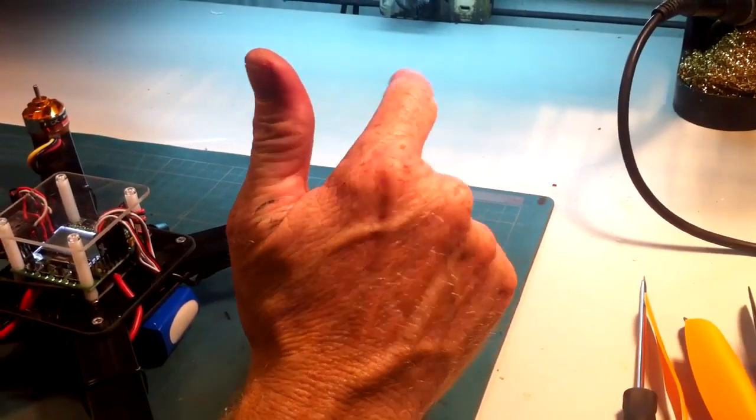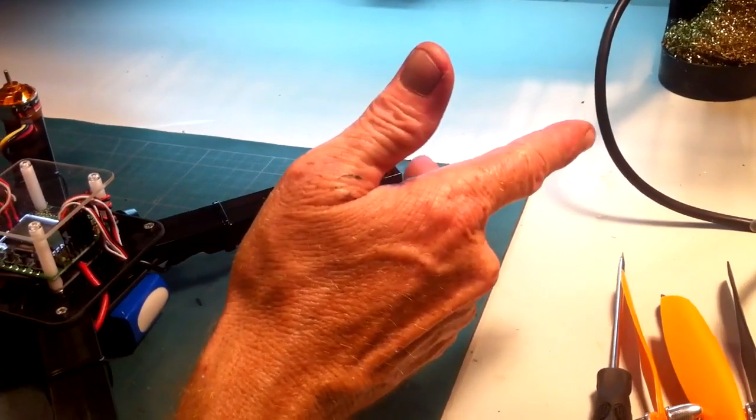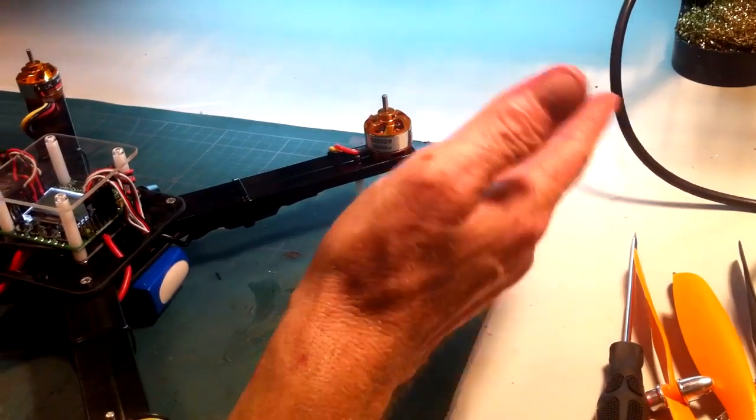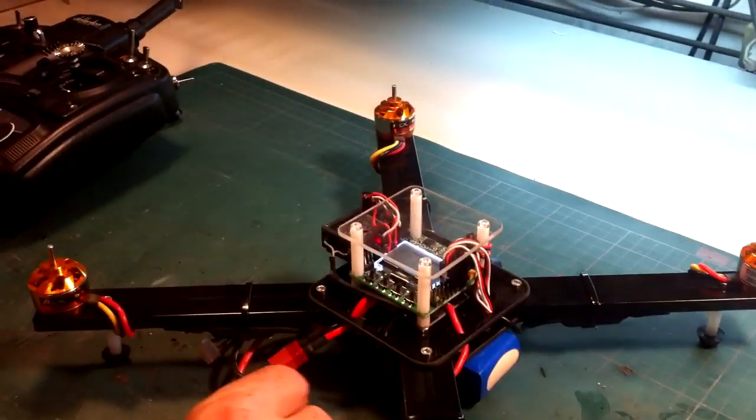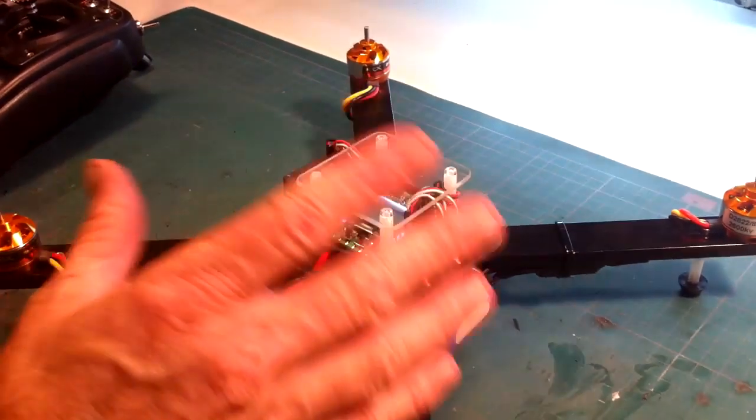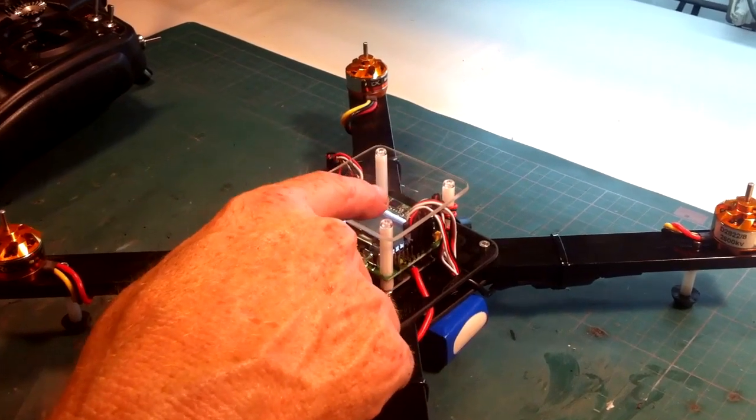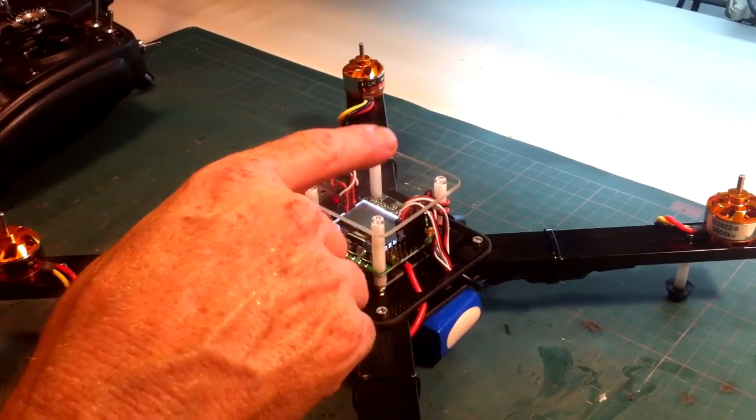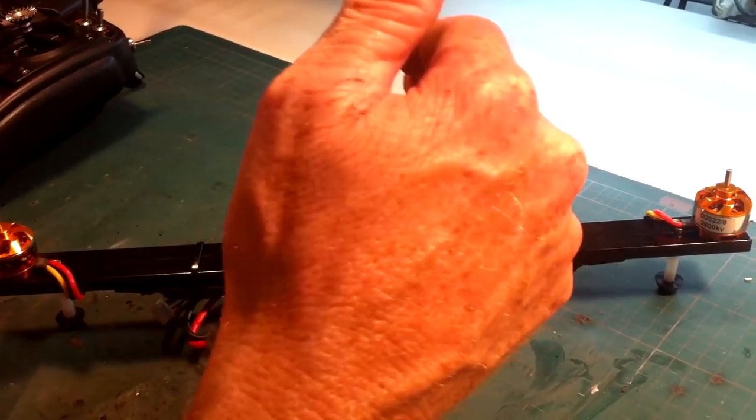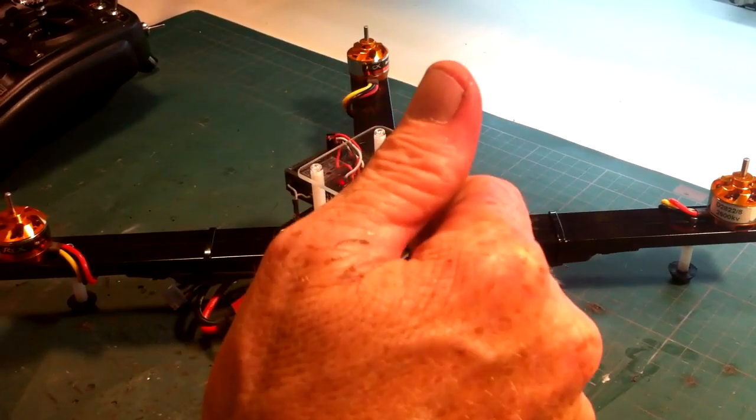Now what I recommend when you go into that you're going to see four figures at the top. P gain, then you got P limit, I gain, and I limit. So for elevator aileron I recommend a starting point of 45, 100, 30, 20.